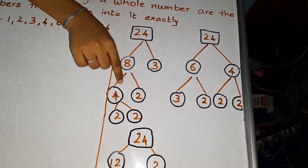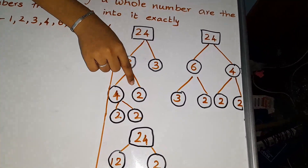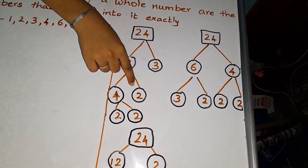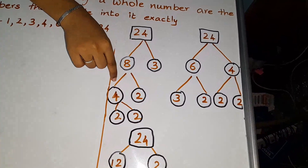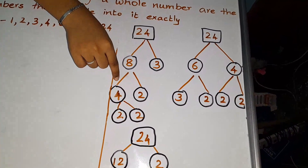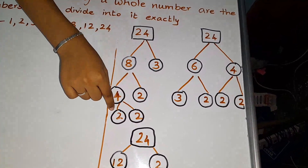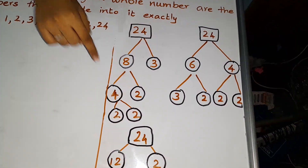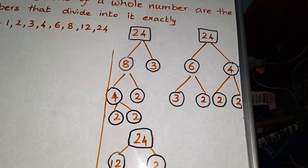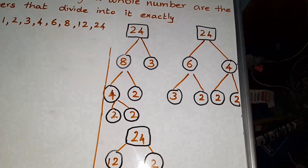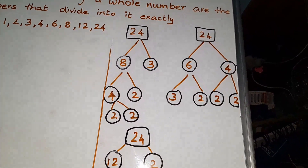So 2 times 4 gives 8, then we can factorize 4. 2 times 2 gives 4. So 2 is a prime number, so we have to stop there.